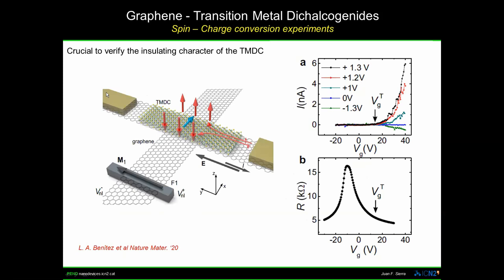Something crucial for this experiment: the current flowing in this arm must flow only in graphene; otherwise, if some current flows through the transition metal dichalcogenide, you can have spurious spin Hall effects arising from the TMD itself. The first thing we did was to characterize this interface. We also attached metallic electrodes to the TMD so we could apply a voltage bias across the TMD–graphene interface and characterize this barrier. As a function of the external back gate applied on the silicon dioxide substrate — which controls the carrier concentration in the system — we see that this interface is insulating up to some threshold voltage, and above that voltage it starts to conduct.